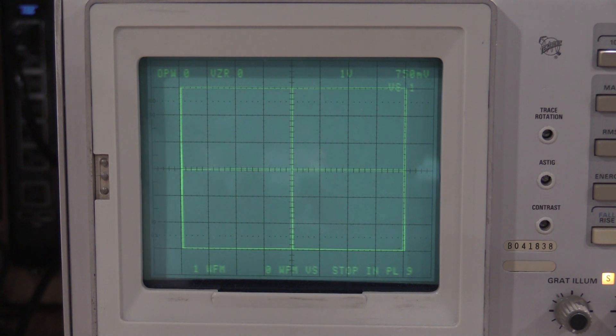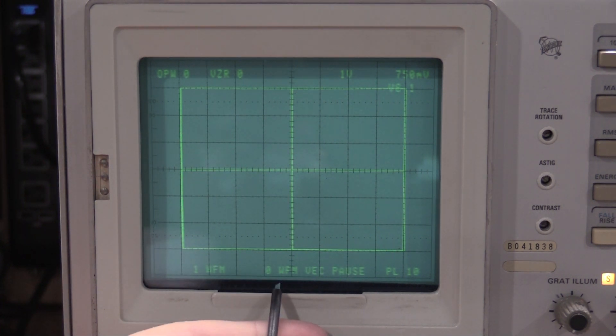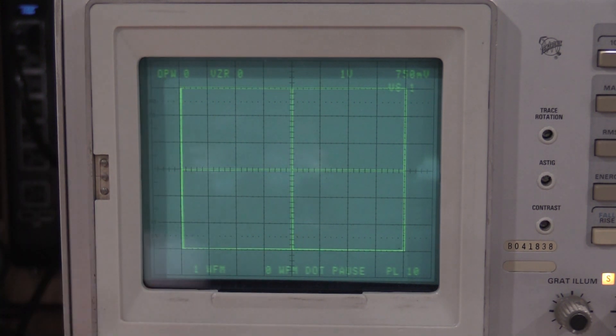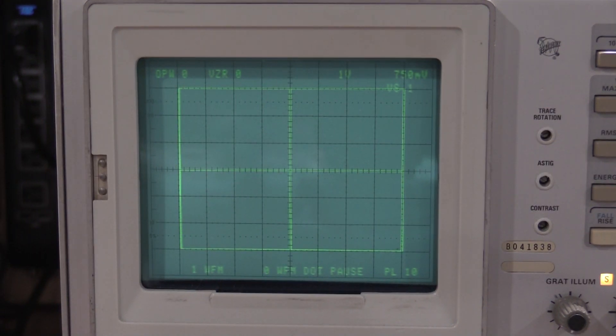Alright, so we hit run on the keyboard. Now what you are seeing is where it says waveform dot pause, vector pause. It is going between dots and vectors. And what you are looking for is no shifting of the display. So, that is good. I do not need to mess with that adjustment.